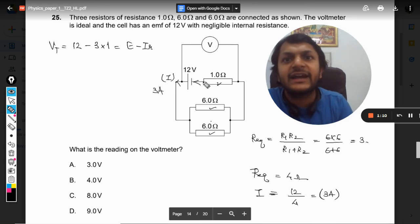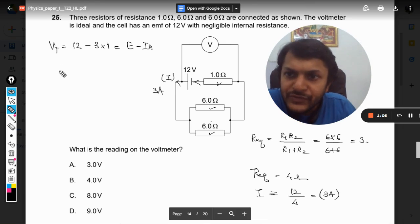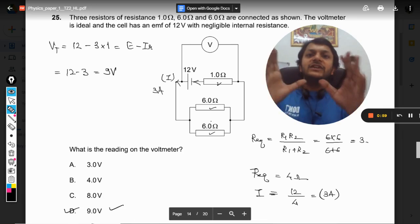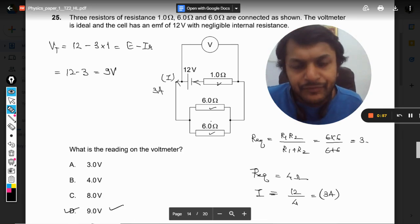Now, VT is equal to E minus IR. This is the formula that I have just told you. This external resistor is acting as if it is the internal resistor only. So what is this? 12 minus 3 is 9 volt, and there you go, we have D as our correct answer.